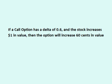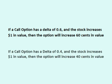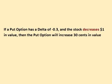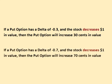For instance, if a call option has a Delta of 0.6 and the stock increases a dollar in value, then the option will increase 60 cents in value. If a call option has a Delta of 0.4 and the stock increases a dollar in value, then the option will increase 40 cents in value. If a put option has a Delta of negative 0.3 and the stock decreases a dollar in value, then the put option will increase 30 cents in value. If a put option has a Delta of negative 0.7 and the stock decreases a dollar in value, then the put option will increase 70 cents in value.